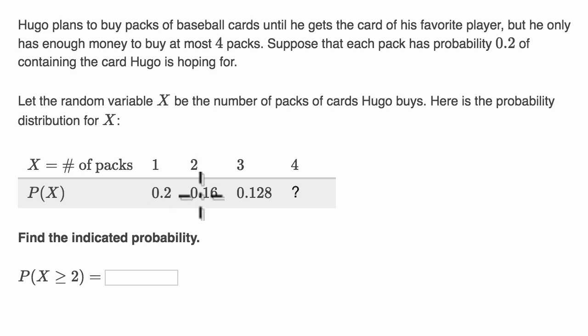Now what about the probability that he buys two packs? Well, they give it a 0.16, and that makes sense. There is a 0.8 probability that he does not get the card he wants on the first one, and then there's another 0.2 that he gets it on the second one. So 0.8 times 0.2 does indeed equal 0.16.